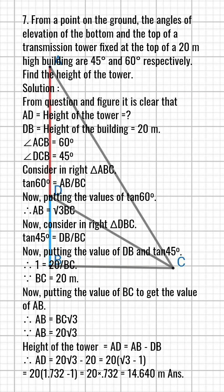Consider right triangle ABC. Tan 60 equals AB over BC. Putting the value of tan 60, AB equals square root 3 times BC.